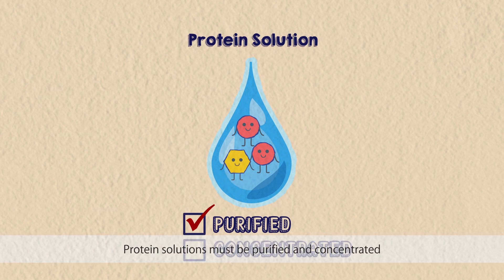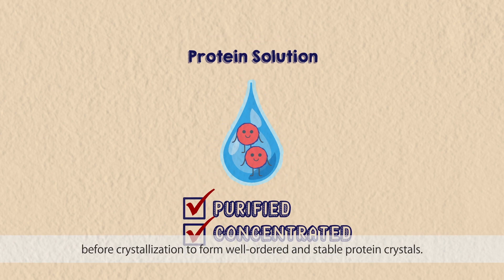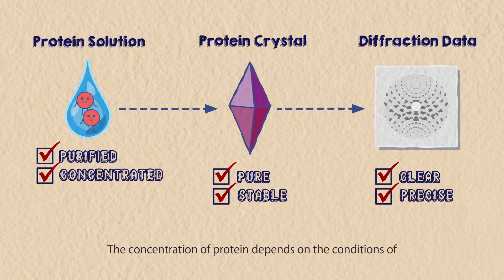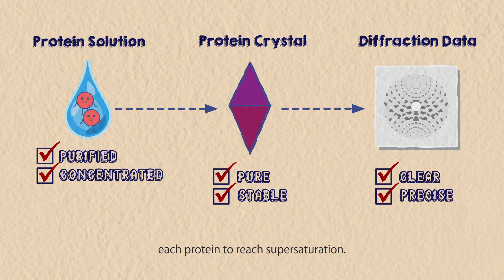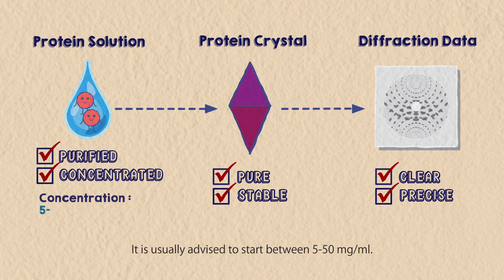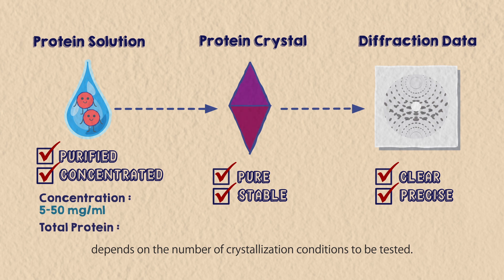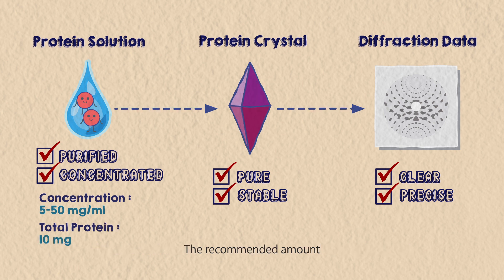Protein solutions must be purified and concentrated before crystallization to form well-ordered and stable protein crystals. The concentration of protein depends on the conditions of each protein to reach supersaturation; it is usually advised to start between 5 to 50 milligrams per milliliter. The total amount of purified protein depends on the number of crystallization conditions to be tested; the recommended amount would be at least 10 milligrams for manual screening.